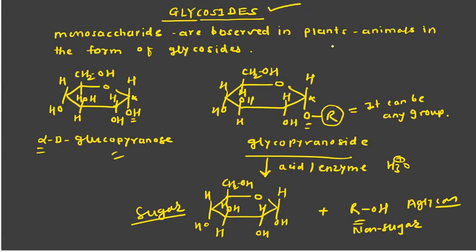Glycosides are natural organic compounds or substances which on acid and enzymatic hydrolysis give two parts: one is the sugar part and the other is the non-sugar part. The non-sugar part is known as the glycon, and the sugar part is a monosaccharide such as D-glucose or D-fructose. In other words, glycosides are derivatives of monosaccharides. The only change is at the hydroxy group attached to the anomeric carbon; the rest of the molecule remains the same.